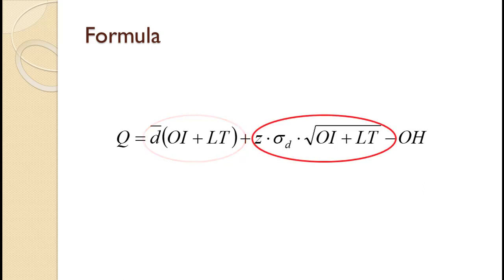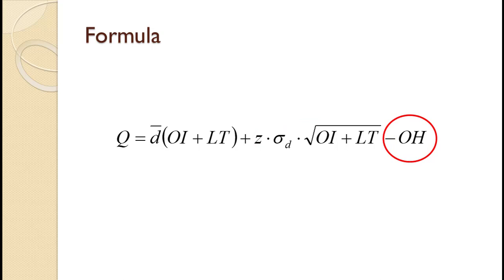The second part of the formula represents safety stock. The daily standard deviation times the square root of the protection period gives us the standard deviation during the protection period. Multiplying by the Z score gives us safety stock. The final part of the formula subtracts the quantity we currently have on hand, since that represents items we do not need to order.